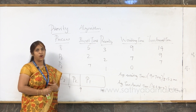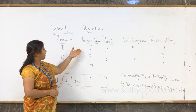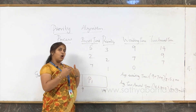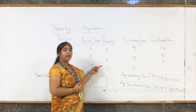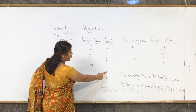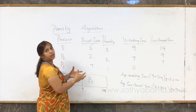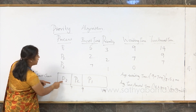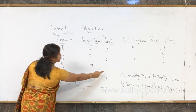The last basic algorithm is priority scheduling. We have the same example — P1, P2, and P3 with their respective burst times — but we also have an additional metric called priority. According to priority, the CPU is given to the process with the highest priority. Priority is denoted by numbers; the lesser the number, the higher the priority. So P3 has the highest priority, P2 has the next, and P1 has the lowest priority.